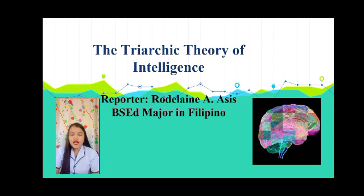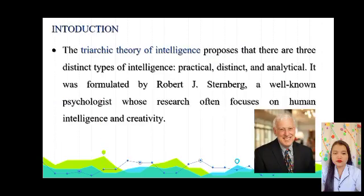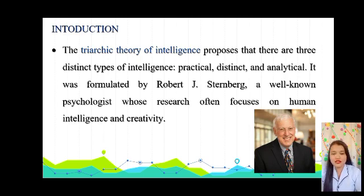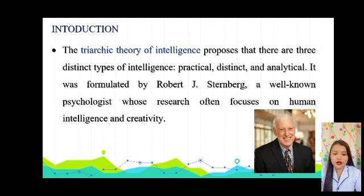First, let's define what the Triarchic Theory of Intelligence by Robert Sternberg is. The Triarchic Theory of Intelligence proposes that there are three distinct types of intelligence: Practical, Creative, and Analytical. It was formulated by Robert Sternberg, a renowned psychologist whose research often focuses on human intelligence and creativity.